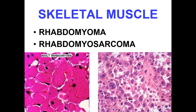We continue with the soft tissue tumors, and today we will go on to skeletal muscle tumors. One is benign, that is rhabdomyoma, and the other is malignant, that is rhabdomyosarcoma. So skeletal muscle differentiation gives two tumors: benign rhabdomyoma and malignant rhabdomyosarcoma.